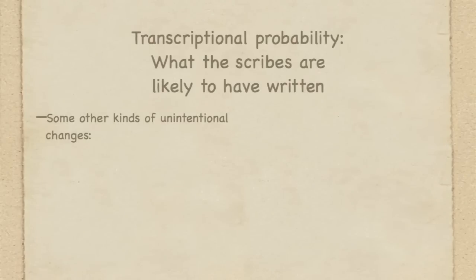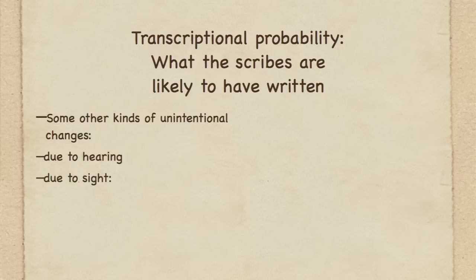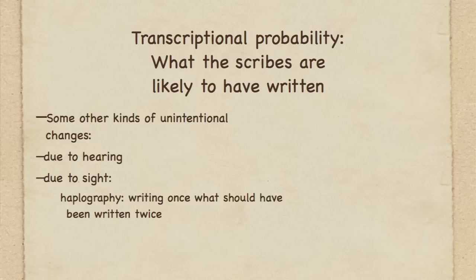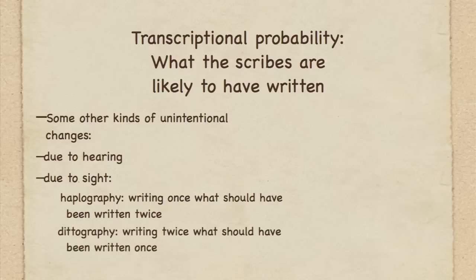Those are not predictable variants — those are accidental changes. Other kinds of accidental changes, all under the rubric of transcriptional probability, include changes due to bad hearing, where someone doesn't hear exactly what the lecturer is reading, so he doesn't copy out the words exactly the same. There's also what's known as haplography — writing out once what should have been written twice — where you see one line, then see another line that ends with the same words, and you copy out the second line, skipping the first one and omitting an entire line of text. Other times you write the same line twice when it should have been written once — that's called dittography. So we've got these accidental changes as well as intentional changes, and all of this comprises what's called transcriptional probability.